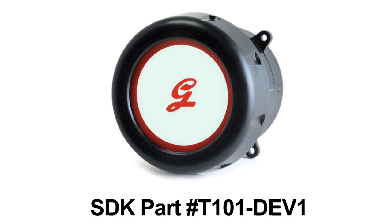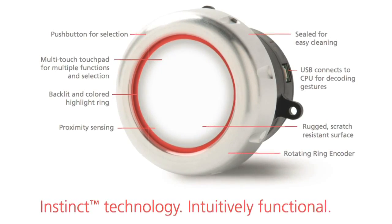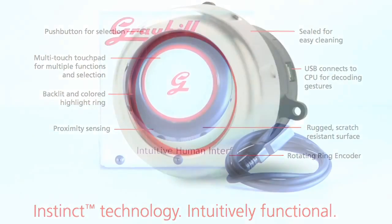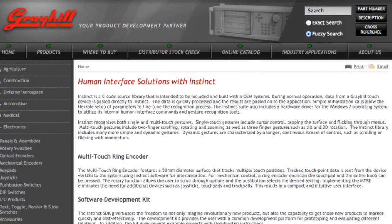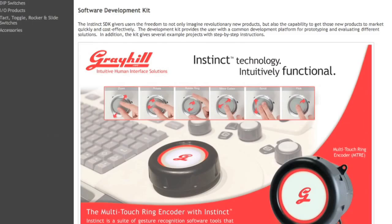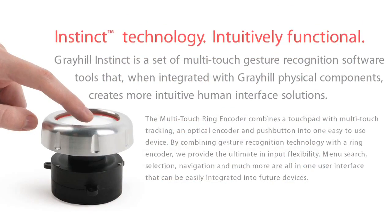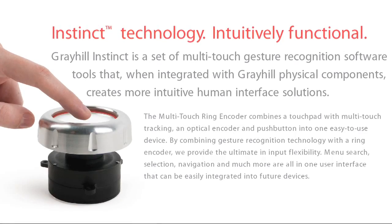A software development kit, or SDK, is now available and provides a common platform for prototyping and evaluating different solutions using the Multi-Touch Ring Encoder with Instinct. Part number T101-DEV1 includes a mounted Multi-Touch Ring Encoder, a standard USB cable, and demo software. A unique PIN number is included that allows quick downloading of the complete Instinct software suite from our secure server. The SDK gives users the freedom to not only imagine revolutionary new products, but also the capability to get those new products to market quickly and cost effectively.